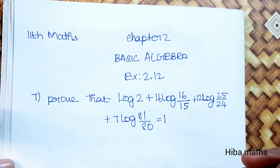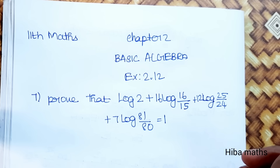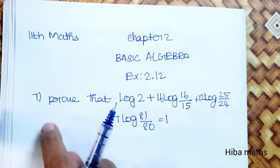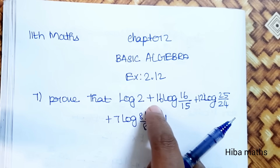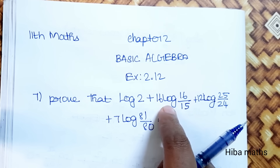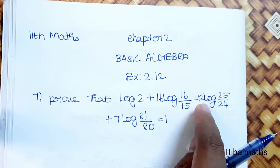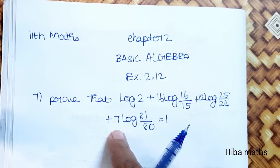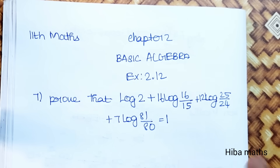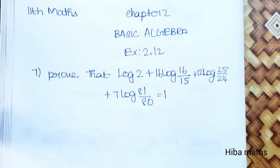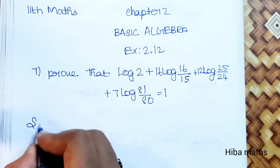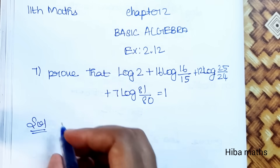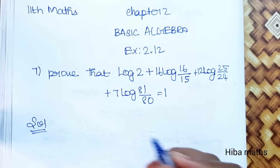Hello students, welcome to Heba Max 11th standard Maths, Chapter 2: Basic Algebra, Exercise 2.12, 7th question. Prove that log 2 plus 16 log(16/15) plus 12 log(25/24) plus 7 log(81/80) is equal to 1. We need to solve and prove the answer equals 1.